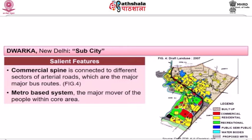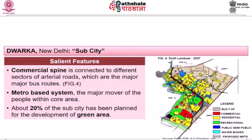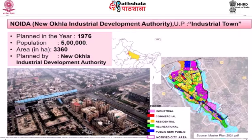The arterial roads are also the major bus routes, so the entire city is covered by public transport as far as possible. About 20 percent of the sub-city area of Dwarka has been planned for the development of green areas, as can be seen in the drawing.